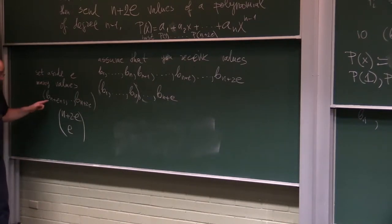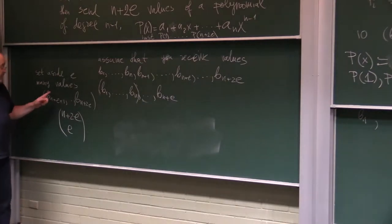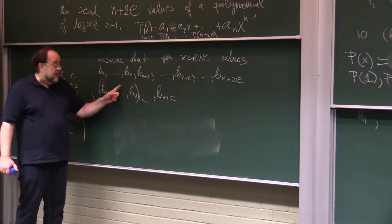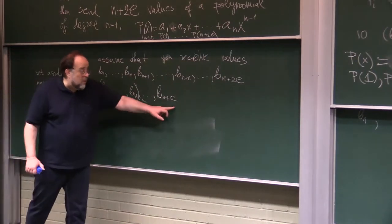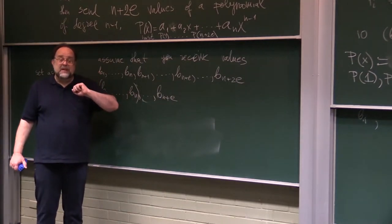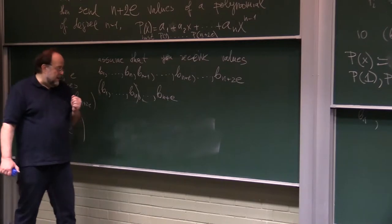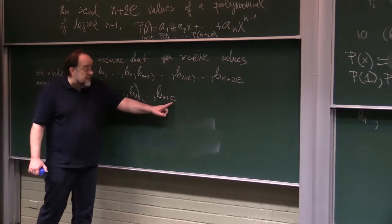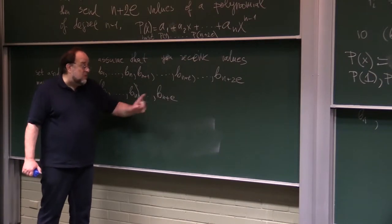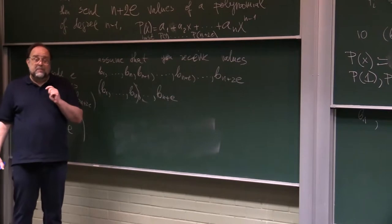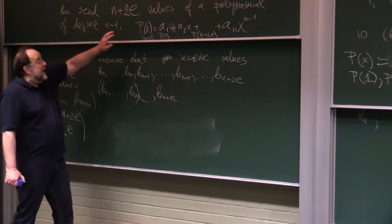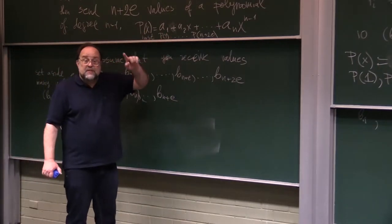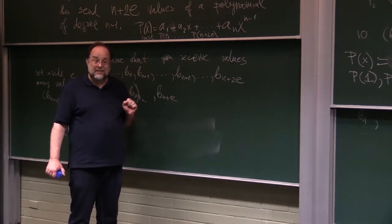Opposite, if you did not isolate all incorrect values, but some of the incorrect values sneaked in here, it cannot happen that all of these points will belong to the same polynomial of degree n minus 1. Why? Because out of n plus e values, at most e's are incorrect, so at least n values will be correct. But if a polynomial of degree n minus 1 matches another polynomial at n values, these two polynomials must be identical.